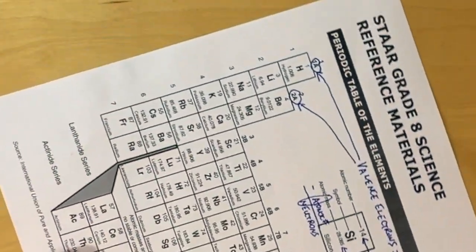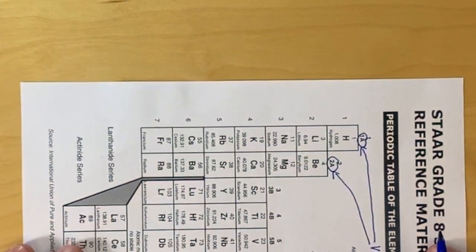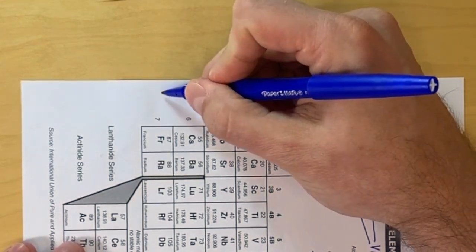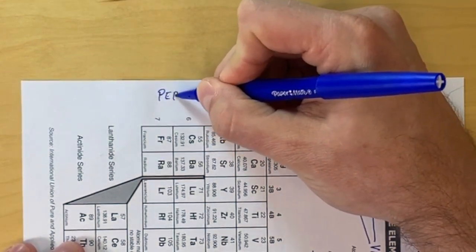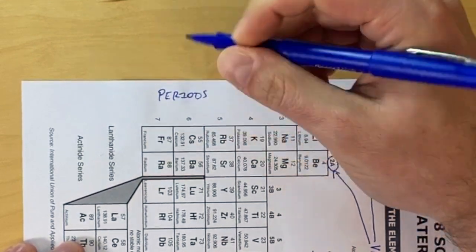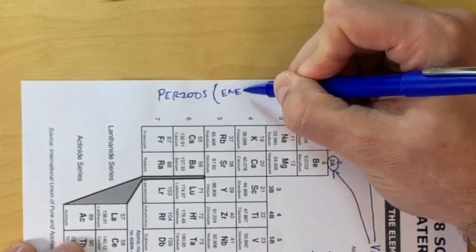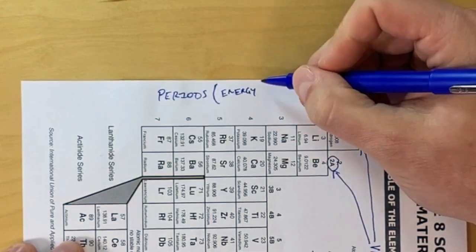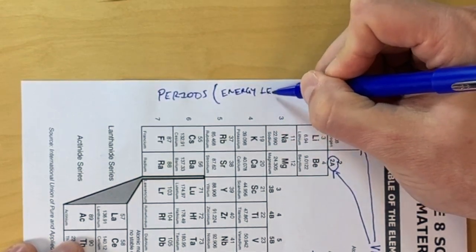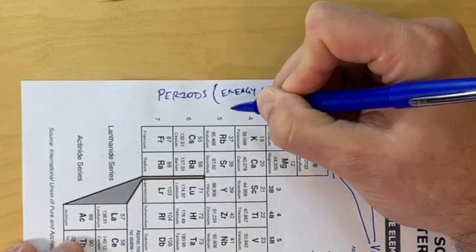We're going to turn our sheet and on the left-hand side, we're going to talk about the rows of the periodic table. The rows are called periods, and the periods on a periodic table represent the number of energy levels or energy shells within a certain element or an atom of an element.